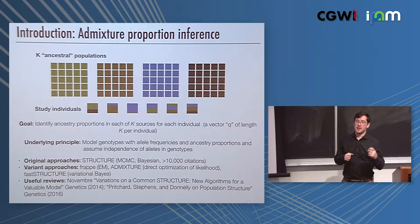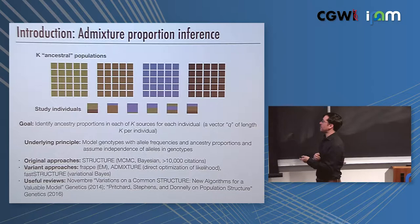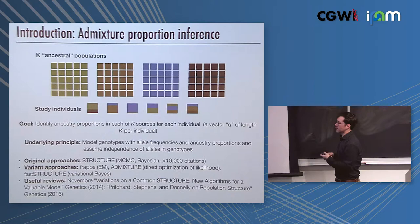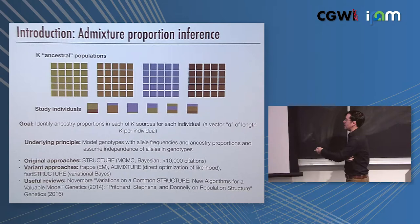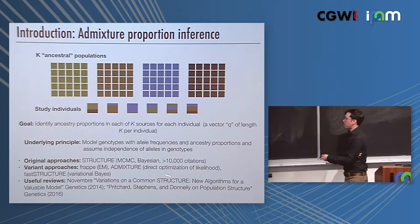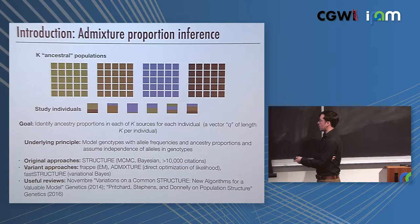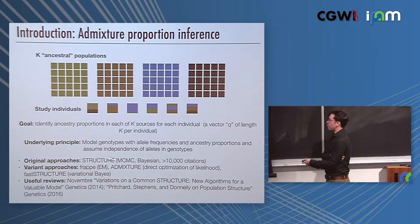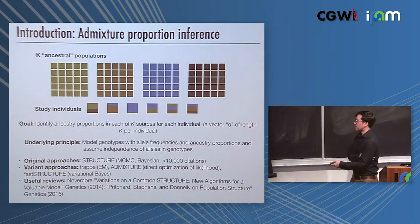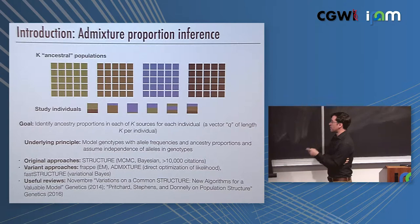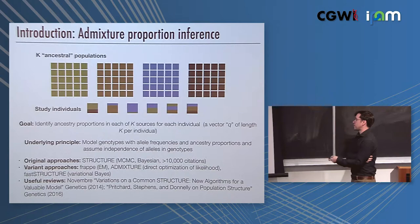We have this vector Q of ancestry proportions of length K per individual. The underlying principle for inferring that is to model the genotypes as being drawn from these source populations with the given ancestry proportions and assuming the independence of alleles within genotypes. In a way, it's looking for a set of allele frequencies in the source populations and ancestry proportions in the study individuals that create the most Hardy-Weinberg fit, that kind of fit that independence most well. The original approach was developed in the software Structure. That's an MCMC approach in a Bayesian context with over 10,000 citations.